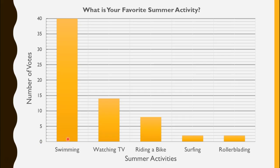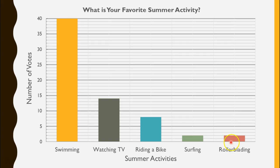Another nice option is to make each category bar a different color. It's visually pleasing and helps your brain separate the categories. That's definitely not required — some bar graphs are just black and white — but it adds a nice extra touch. The whole point of having a graph is to visually help someone see your data quickly and be able to make sense of it.